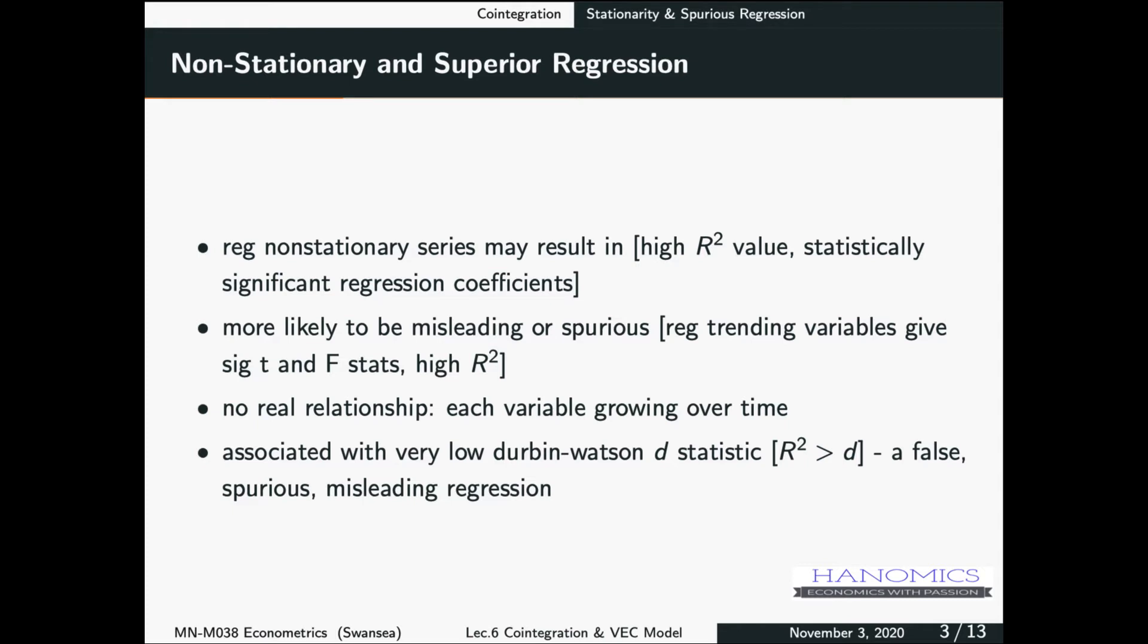So in some cases as well, as an indication of spurious regression, you would have R-squared greater than Durbin-Watson statistic. So this is something that should make you worry about the sort of regression you have.